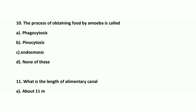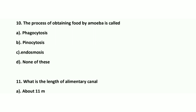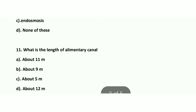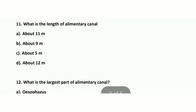Question number 10: The process of obtaining food by Amoeba is called what — phagocytosis, pinocytosis, endosmosis, or none of these? The answer is phagocytosis. The solid material is taken by the Amoeba through phagocytosis. Pinocytosis is the intake of fluid material.